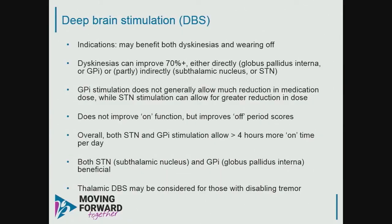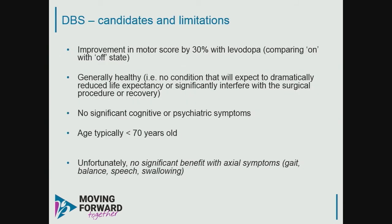Deep brain stimulation helps both dyskinesias and wearing off. The two sites are the globus pallidus interna or the subthalamic nucleus — both are acceptable and depend on the surgeon's comfort. You can also stimulate the thalamus for people with really disabling tremor, though thalamic stimulation won't help with the other Parkinsonian features. Typical criteria include being under 70, no significant cognitive or psychiatric features. DBS doesn't help with axial symptoms like speech, swallowing, gait, and balance — and in some people, it can make speech a bit worse.